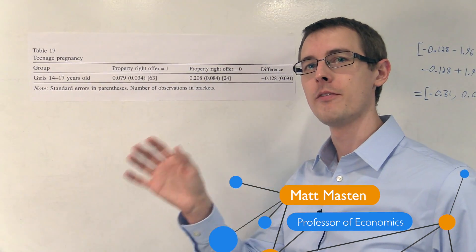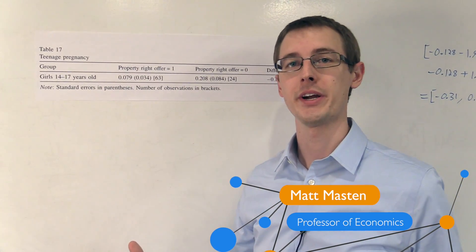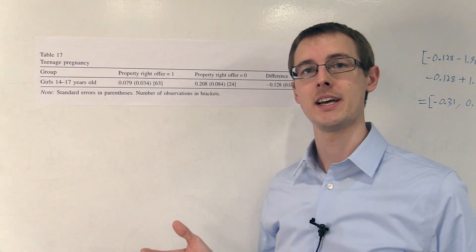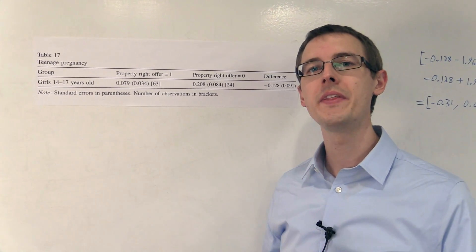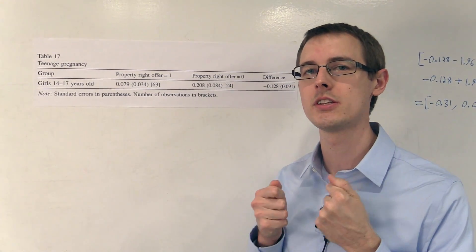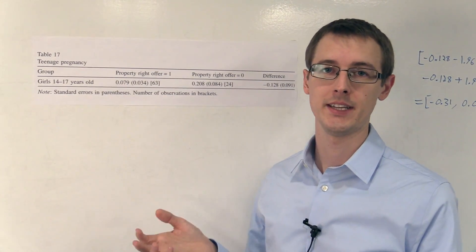Next, we're going to look at the effect of having property rights on teenage pregnancy. Now in this example, there was non-compliance with treatment assignment, meaning that some households had the option of getting property rights, but they didn't actually get the titles to the land because they didn't fill out the paperwork or something like that.